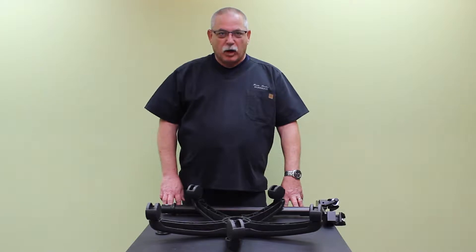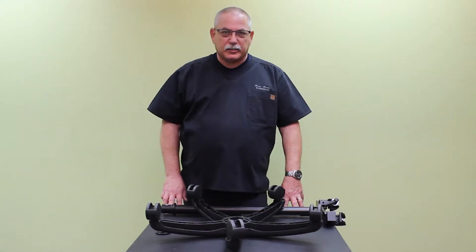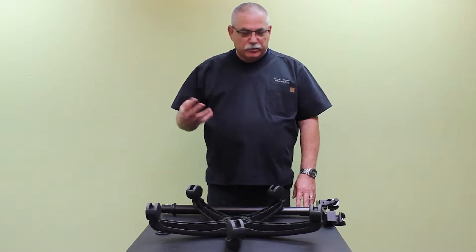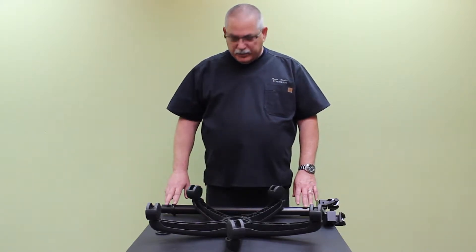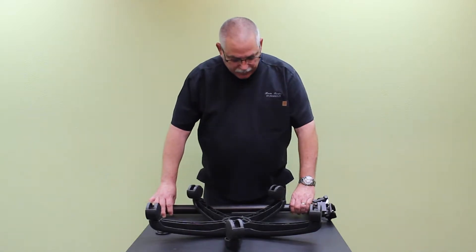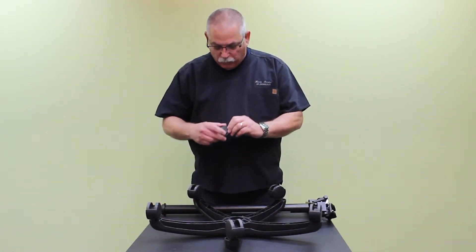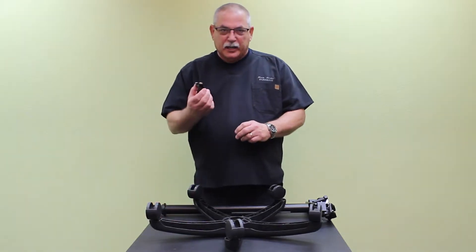The first thing we're going to want to do is assemble the transportation stand. As you unpacked, you should have four components to the transportation stand: the pole that has the threaded stud on the end, the rolling base, what we call a locating washer, and a locking knob.